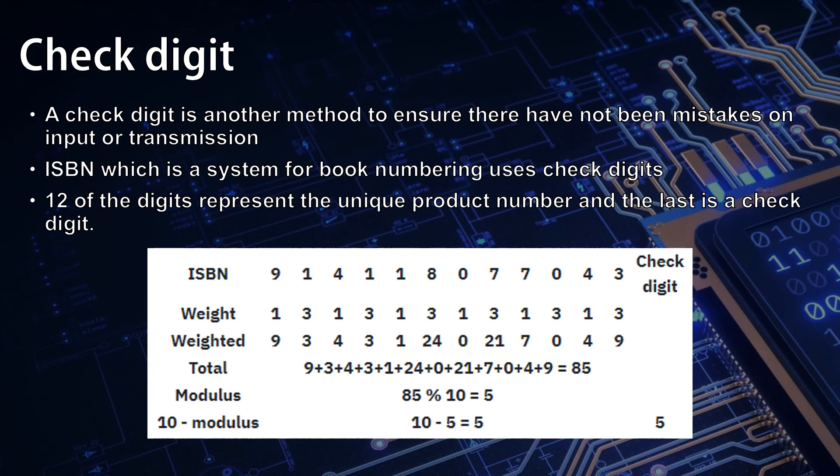This total is then divided by 10 using modulus to get the remainder. This remainder is then subtracted from 10, and this is the check digit.